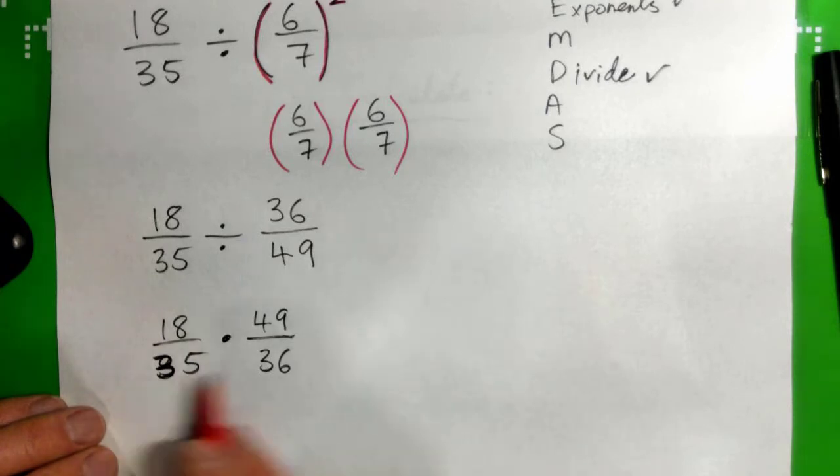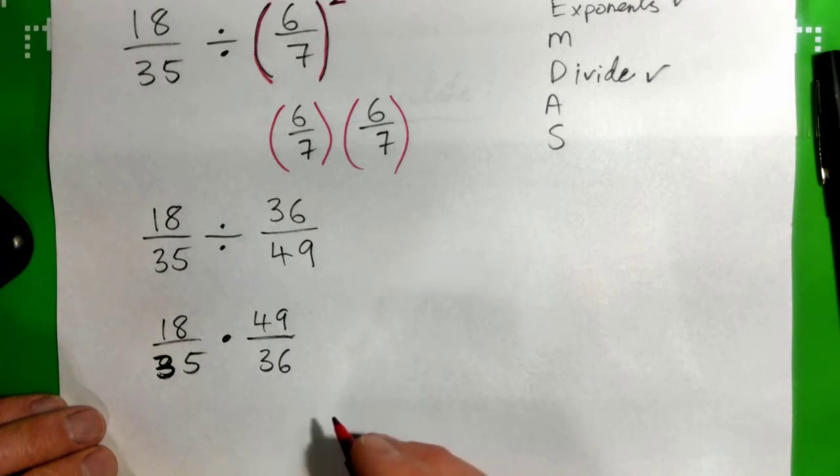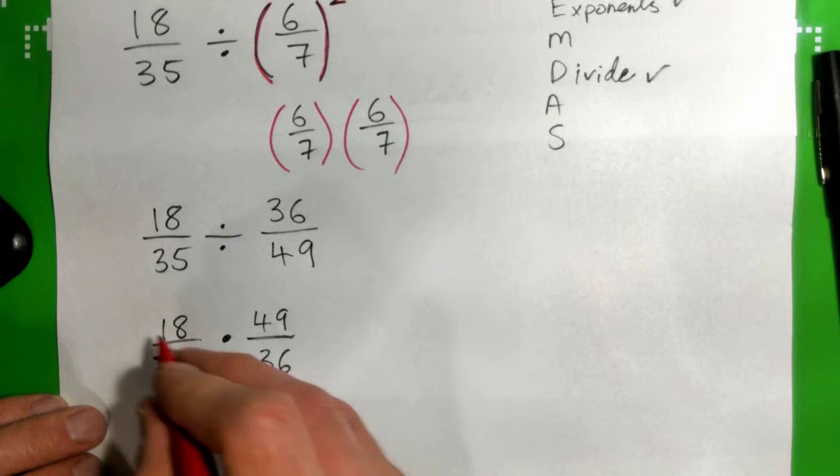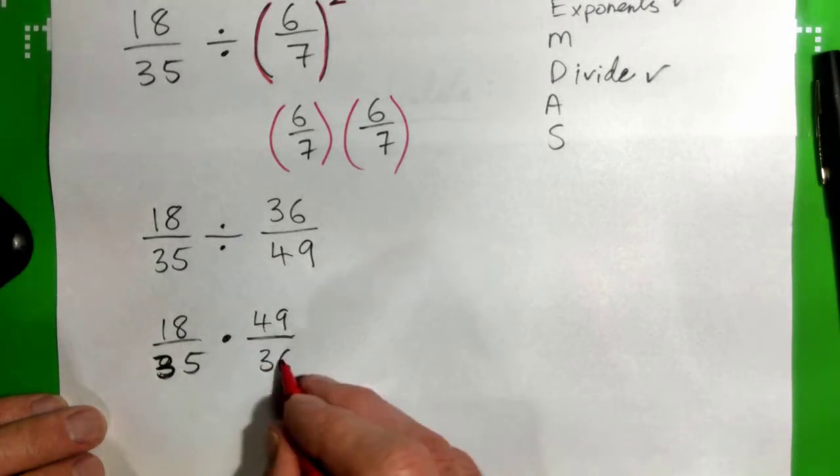So we can do, what can we cross-cancel? Yeah, wow good job. Eighteen goes into eighteen once and eighteen into thirty-six twice.